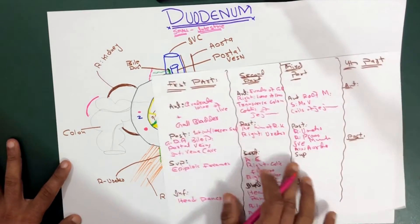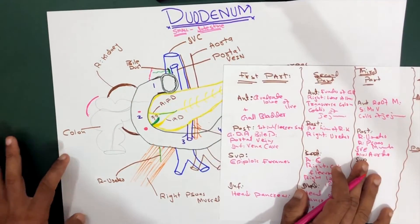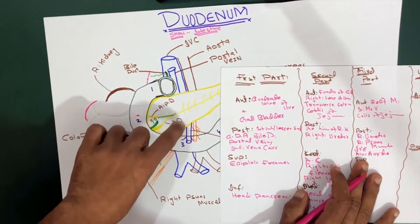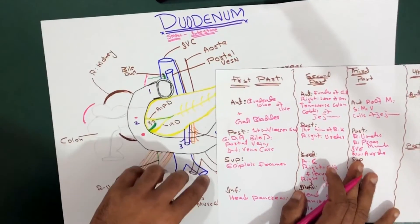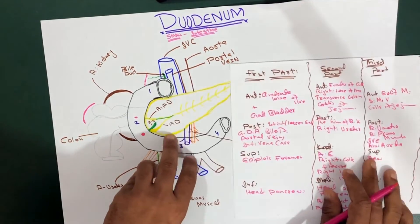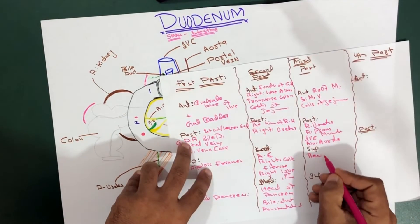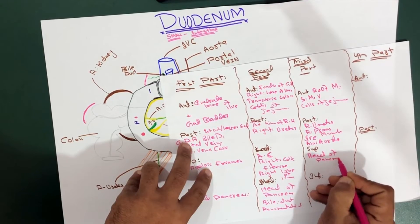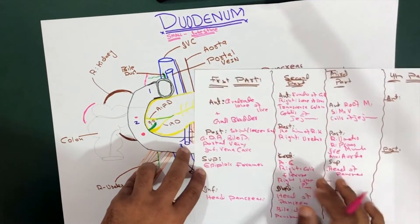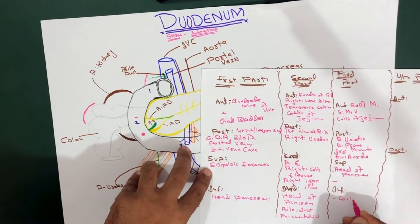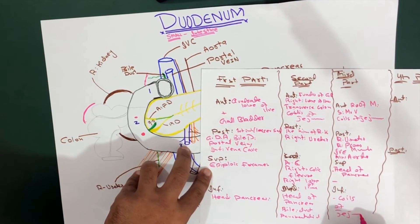If we talk about the superior structures, it is very easy to see in this diagram that superiorly we have got the pancreas — specifically the head of pancreas. And inferiorly, we have got the coils of jejunum.